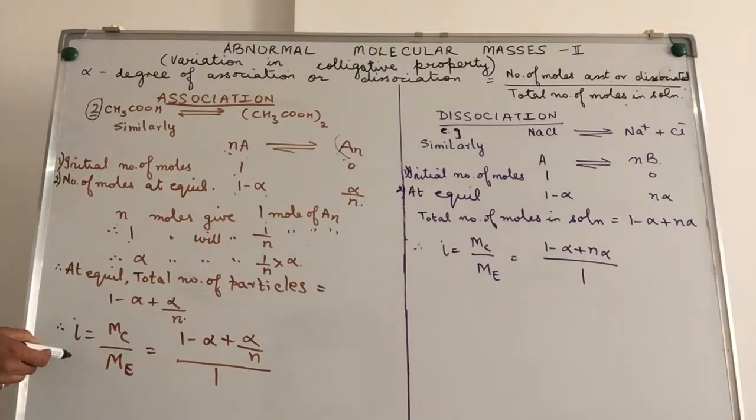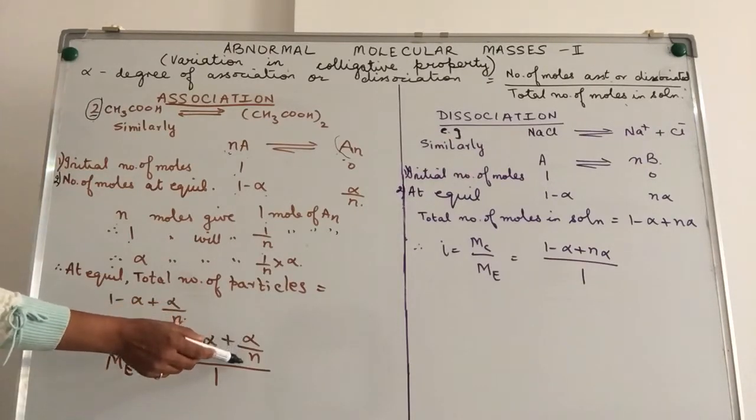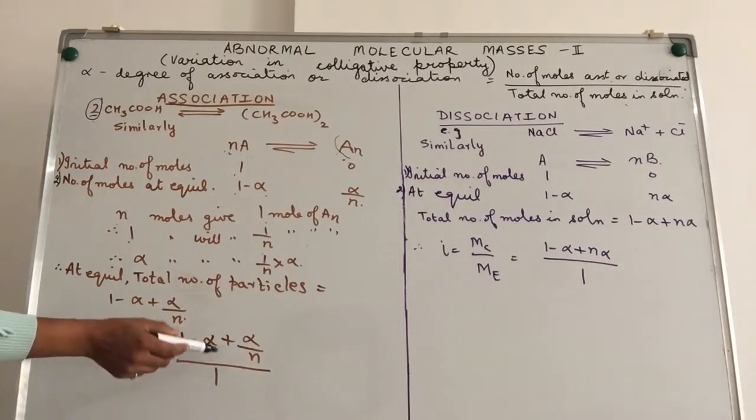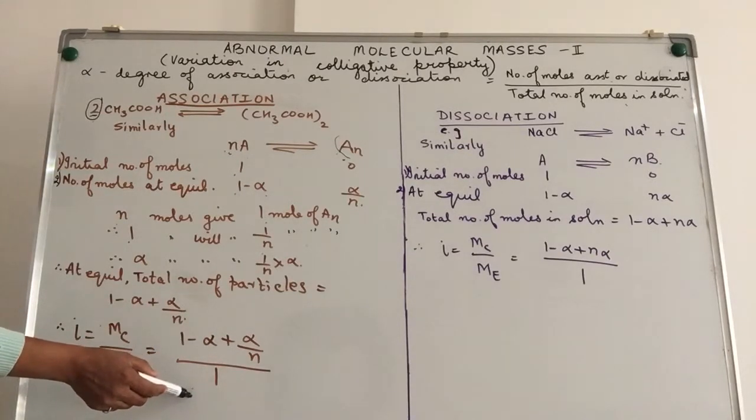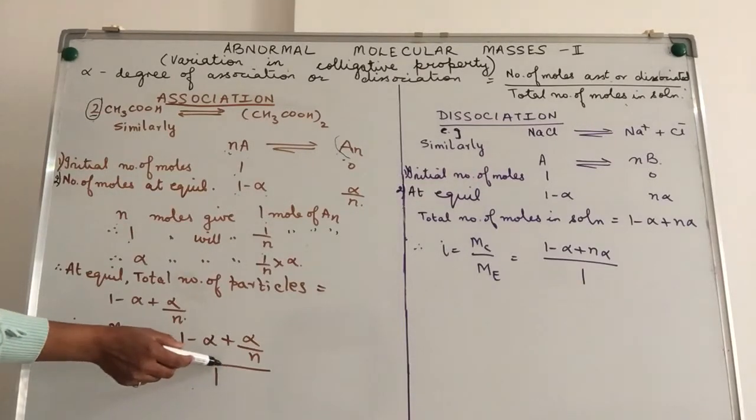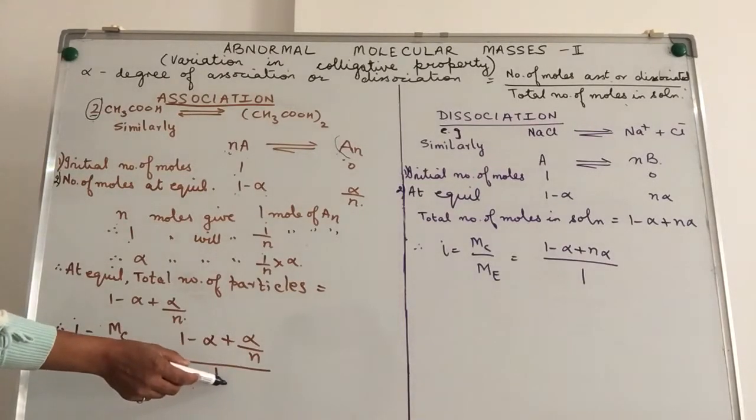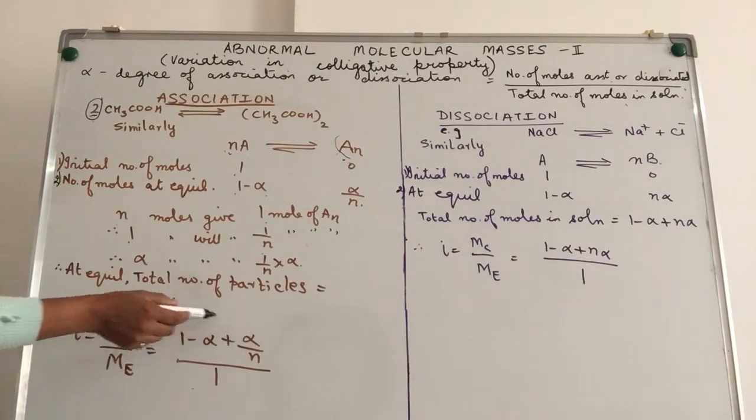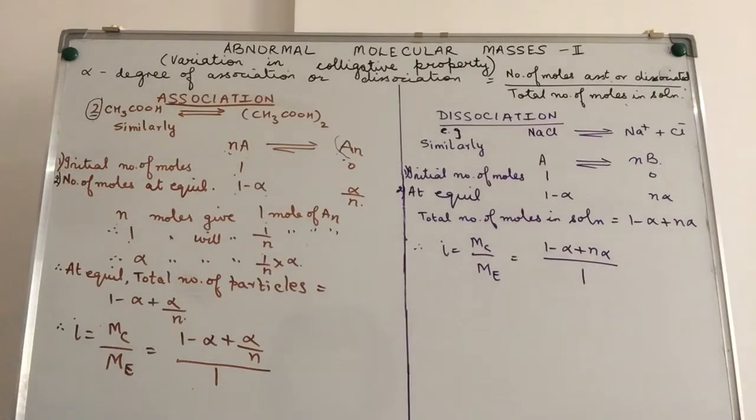Iota, that is Van't Hoff factor, we had defined it earlier as the ratio of calculated molar mass divided by the experimental molar mass. So, Iota Van't Hoff factor is (1-α + α/n) divided by 1. That means the actual number of particles divided by the number of particles originally taken. Basically saying your theoretical colligative property and the experimental colligative property, because if you remember we had said that molar mass and the colligative property are inversely related.